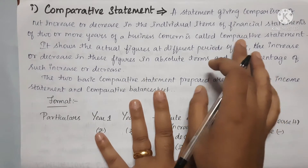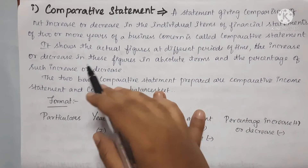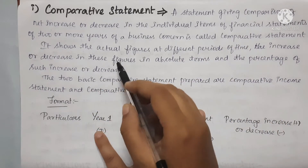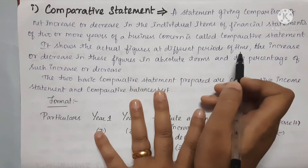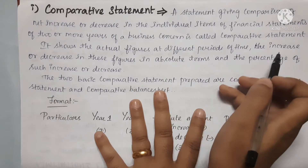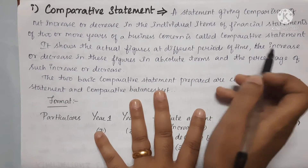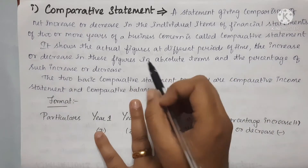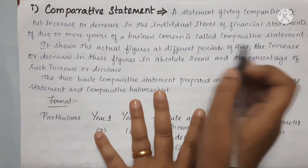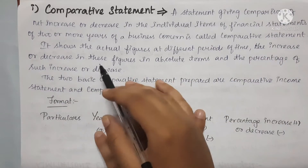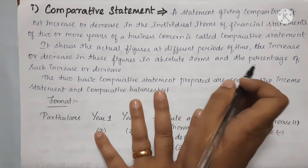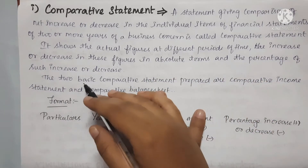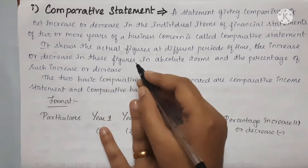The comparative statement shows the actual figures at different periods of time. The increase or decrease in these figures is shown in absolute terms and as a percentage of such increase or decrease.